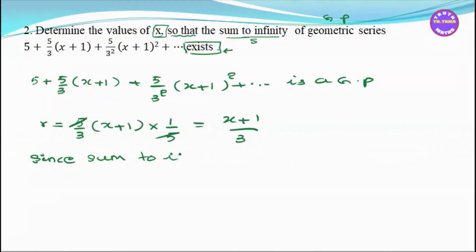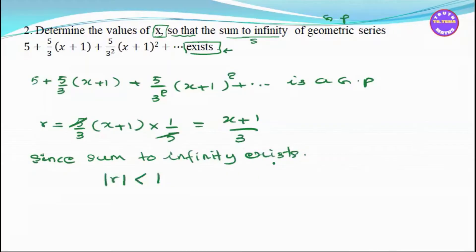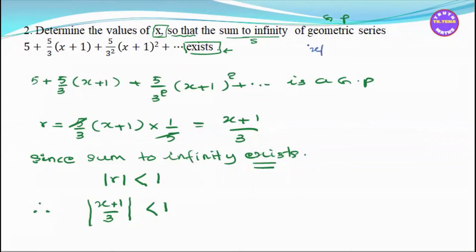For the sum to infinity to exist, we need modulus of r less than 1. So the modulus of (x+1)/3 must be less than 1. This gives us two options: x is plus or minus. We apply the modulus definition.